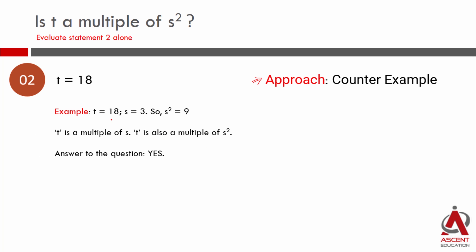This is what I'm picking. t is equal to 18. s is equal to 3. s should be a prime number. So s square is equal to 9. Is t a multiple of s? Yes, 18 is a multiple of 3. Is t a multiple of s square? Yes it is. 18 is a multiple of 9? Yes it is. So answer to the question is yes.